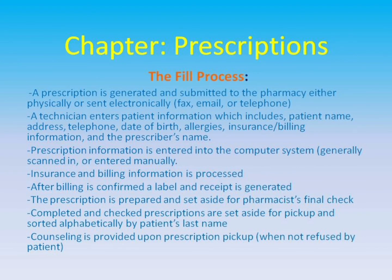The fill process. A prescription is generated and submitted to the pharmacy, either physically or sent electronically — fax, email, or telephone. A technician enters patient information, which includes patient name, address, telephone, date of birth, allergies, insurance and billing information, and the prescriber's name. Prescription information is entered into the computer system, generally scanned in or entered manually. Insurance and billing information is processed. After billing is confirmed, a label and receipt is generated. The prescription is prepared and set aside for the pharmacist's final check. Completed and checked prescriptions are set aside for pickup and sorted alphabetically by patient's last name. Counseling is provided upon prescription pickup, when not refused by patient.